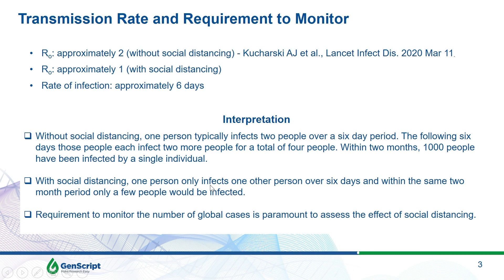This underlines the requirement to monitor the number of global cases, because we need to assess the effect of social distancing on the R0 number. If the R0 is one or lower, we are effectively eradicating the virus and keeping it under control. But as soon as R0 rises above one, we can have this exponential increase where infection runs rampant through society, affecting our healthcare systems, our economy, and everything.